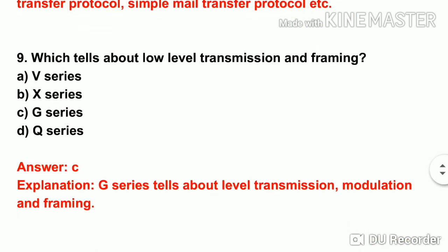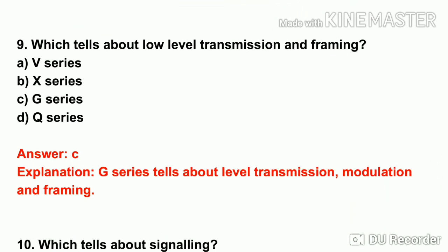The next question: which series tells about low-level transmission and framing? The options are V series, X series, G series, and Q series. The answer is G series — G series covers low-level transmission, modulation, and framing.